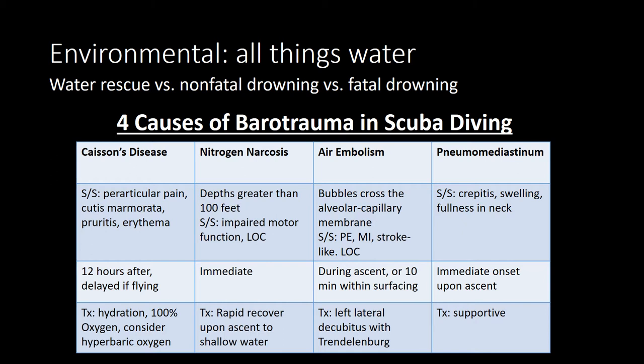There are four causes of barotrauma in scuba diving patients. The first is Caisson's disease, also known as decompression sickness or the bends. It occurs when you ascend too quickly. Signs and symptoms are periarticular pain such as around the shoulders, joints, and elbow joints, cutis marmorata which is venous stasis, pruritus, and erythema. There is no loss of consciousness. Treatment is 100% oxygen, and sometimes hyperbaric oxygen as well.